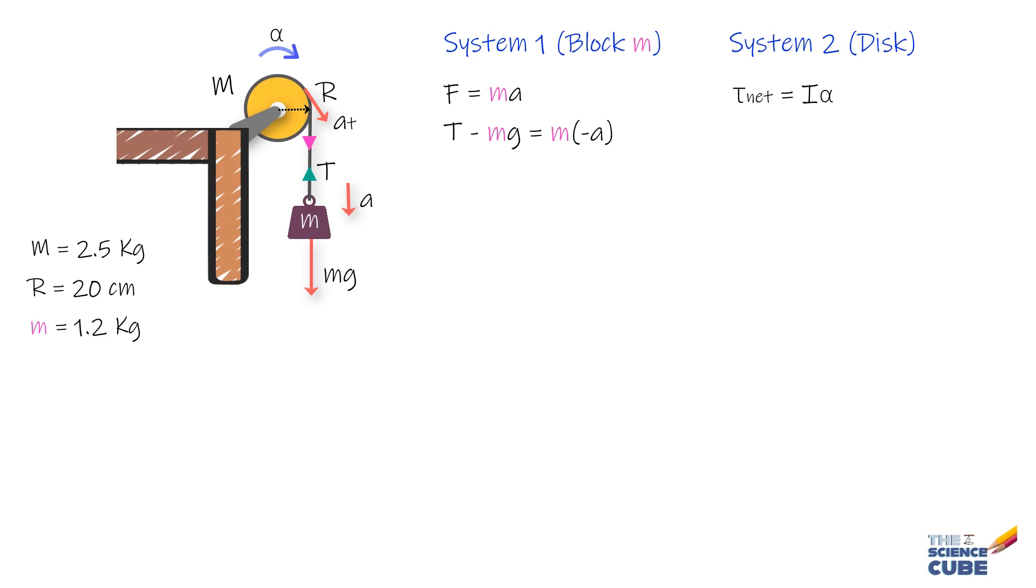here we will consider the rotation of the disc and use Newton's second law in angular form rather than linear. So we take the axis of rotation perpendicular to the disc and see what form the general equation torque equals r times force will take.